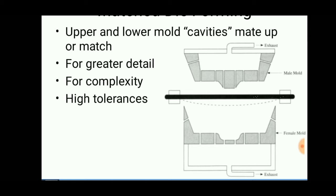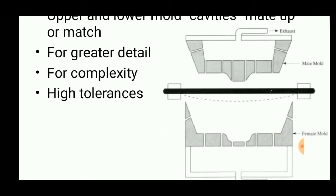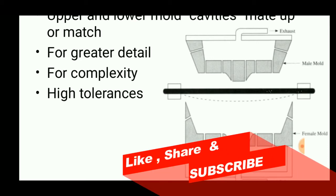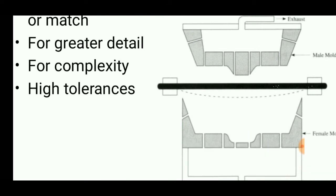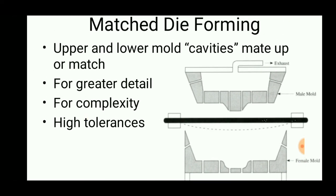When we make this operation, that is the male mold attaches towards the female mold, some air blows or air cavities may happen. We want to remove that air; if not, the air may make damage to the product. So vents are located in this mold.